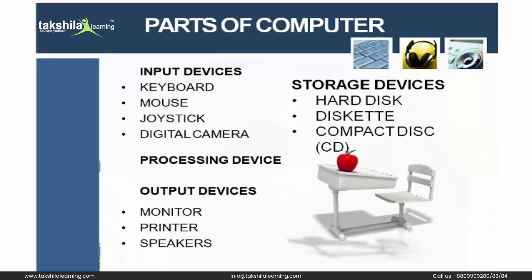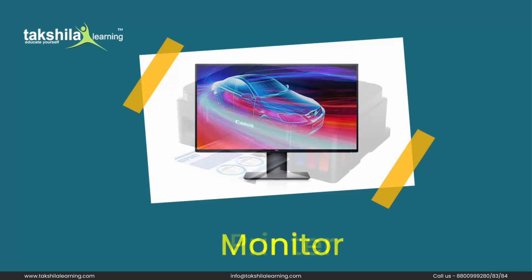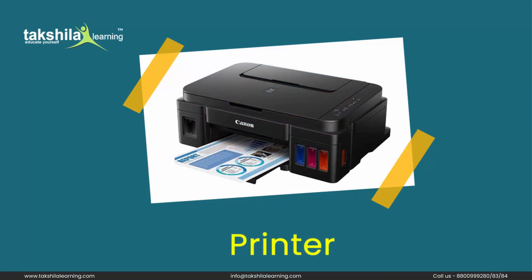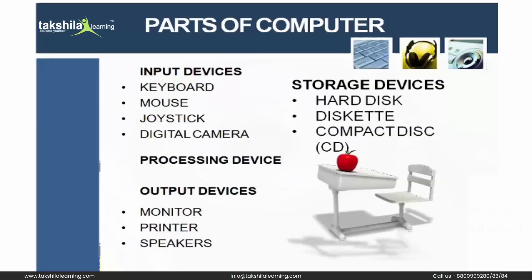Output devices are those devices on which we can see the results that the computer provides. Monitor is a display device that shows the results — the output that the computer gives to us. Printer is also an output device that gives us results in printed form. Speakers allow us to listen to songs that are recorded in the computer.